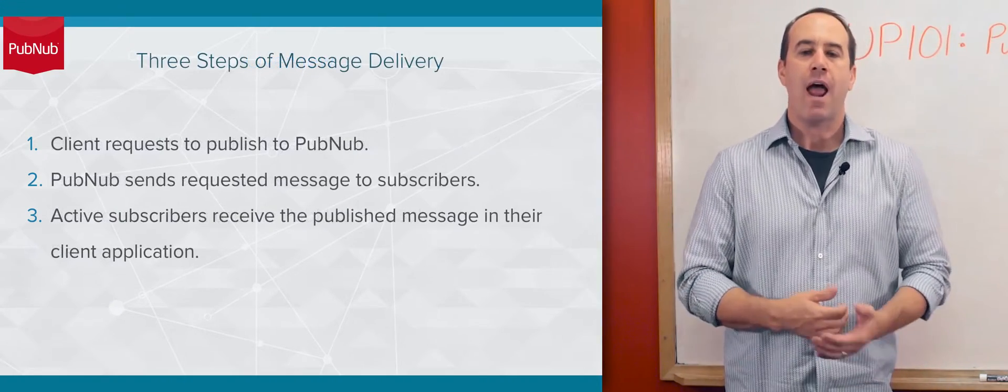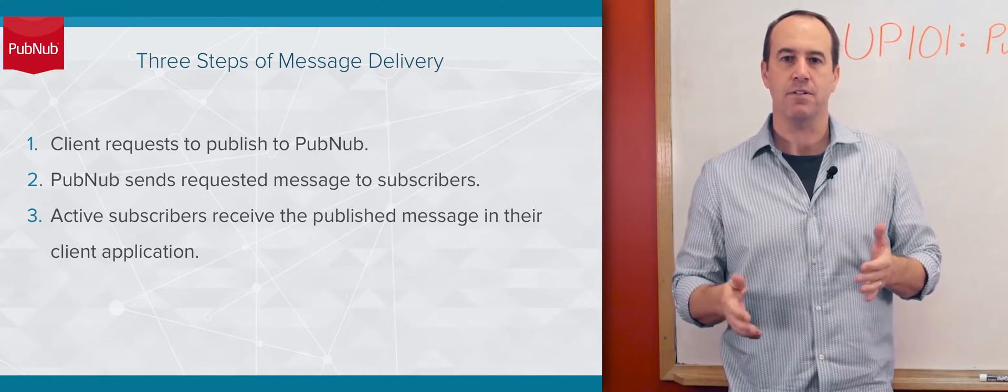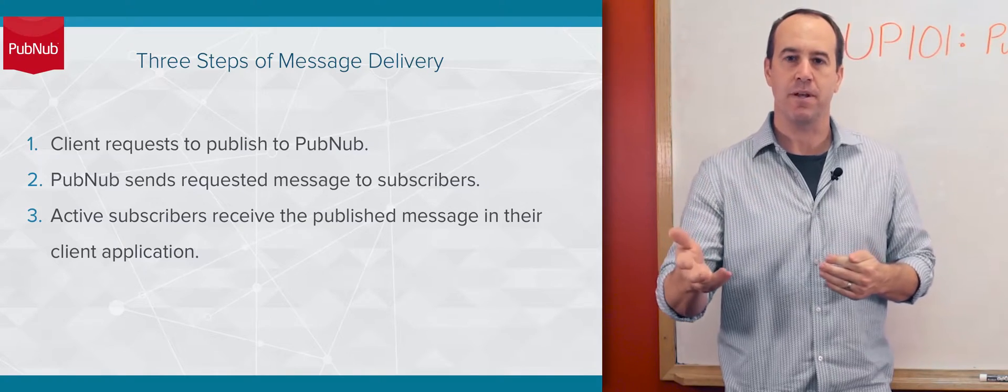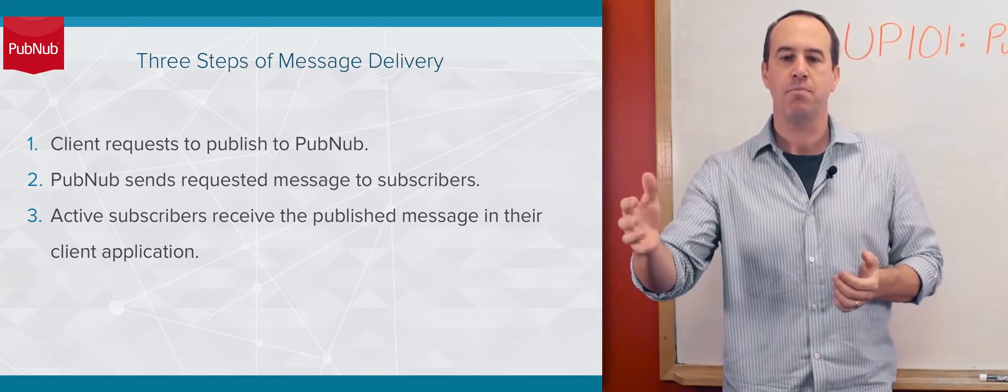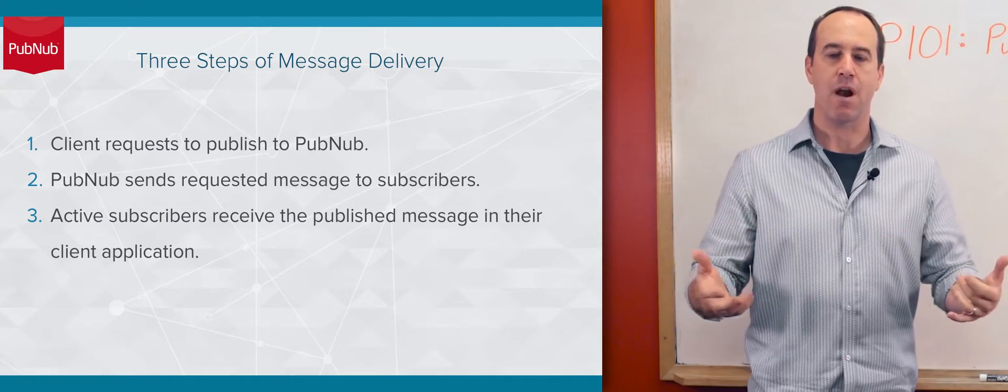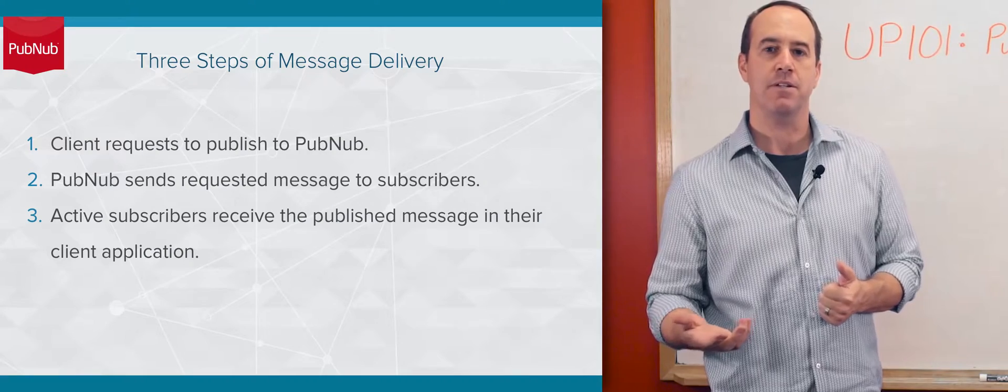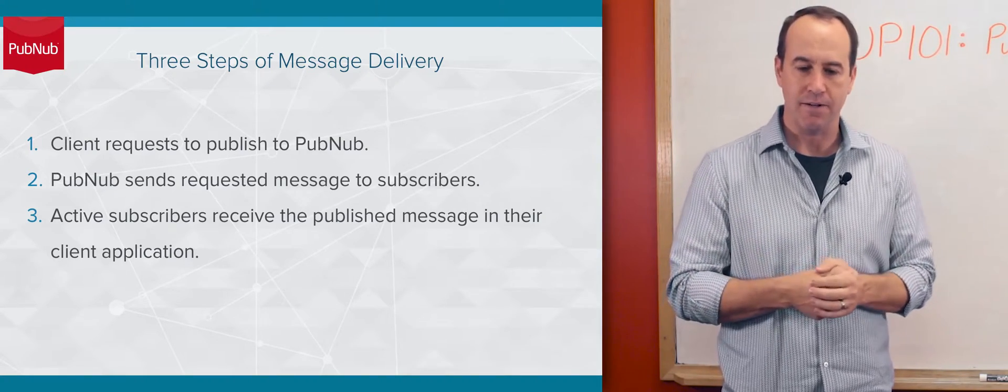When you publish a message, you're actually asking PubNub to send a message to your subscribers. So there are three basic phases. You got the request to publish the message from your app to PubNub. PubNub takes that request and then sends that to all the subscribers that are actively subscribed and online. And then finally, the reception of that message by your subscribers in your application on the receiving end.